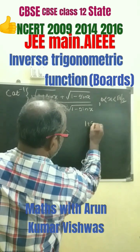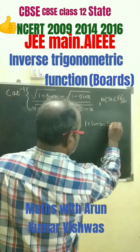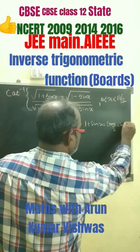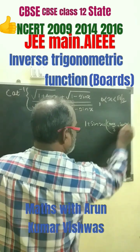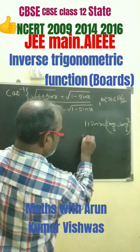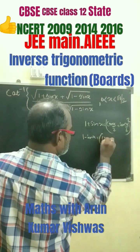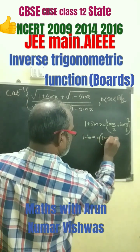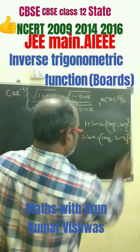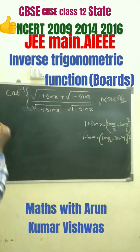For 1 plus sin x, you have to write cos(x/2) plus sin(x/2), whole square. And 1 minus sin x, write cos(x/2) minus sin(x/2), whole square. You just have to write and replace these identities.